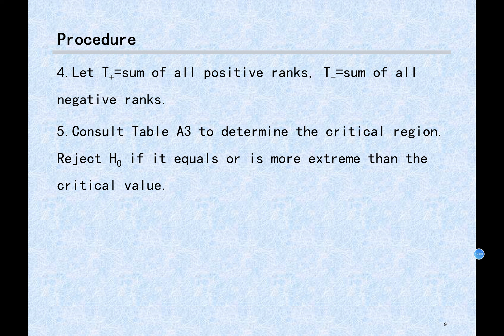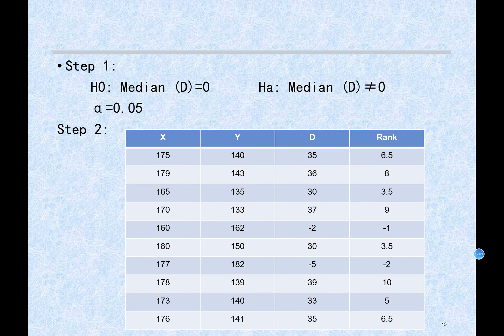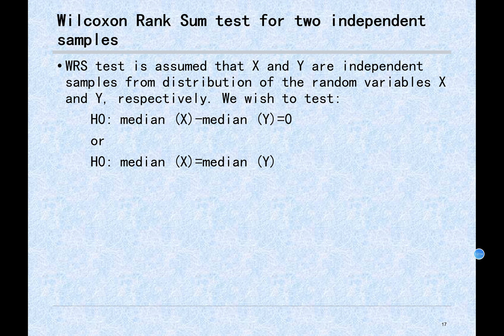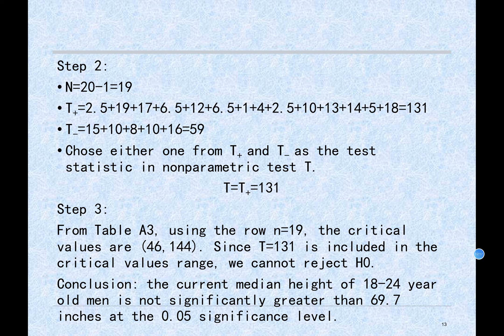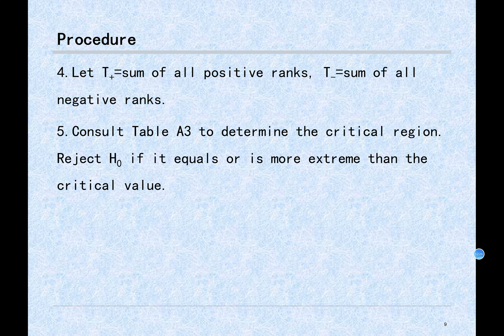For a paired sample test, the procedure is similar: calculate the differences, arrange their absolute values in order of magnitude ignoring signs, then attach the signs of the original differences to the ranks.